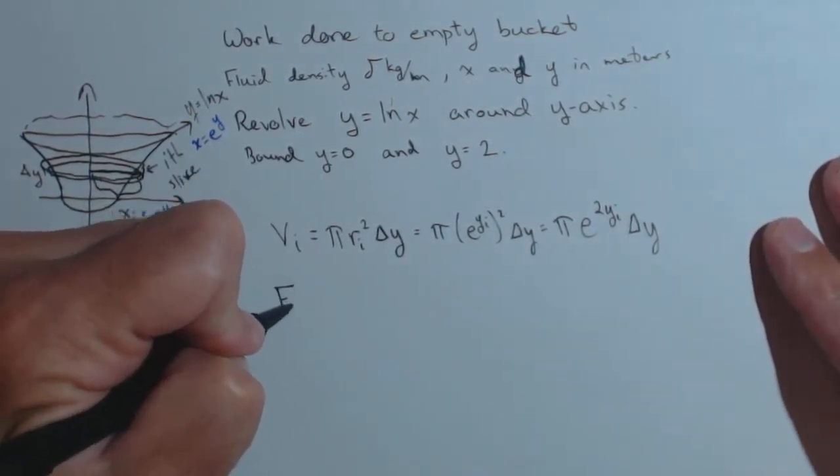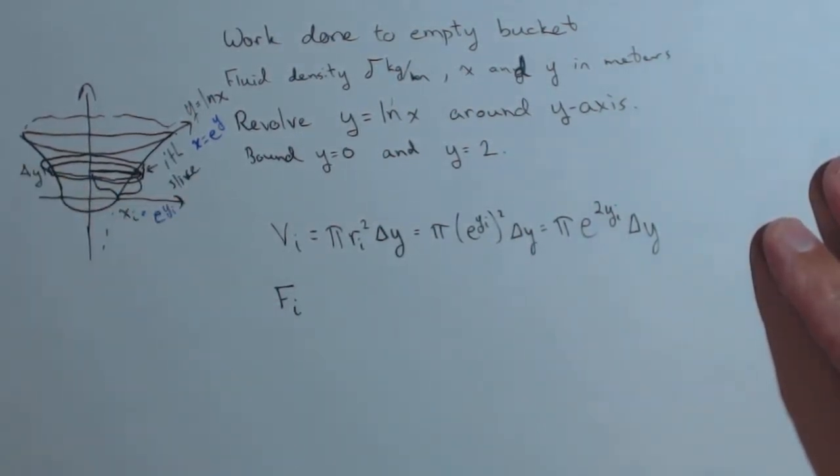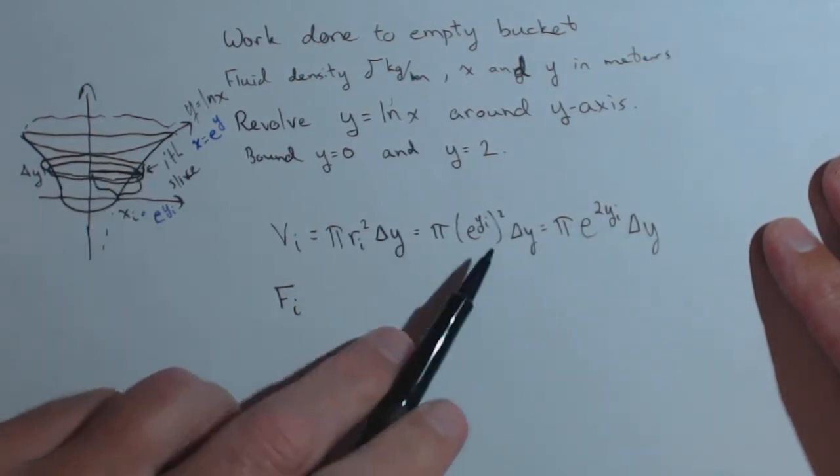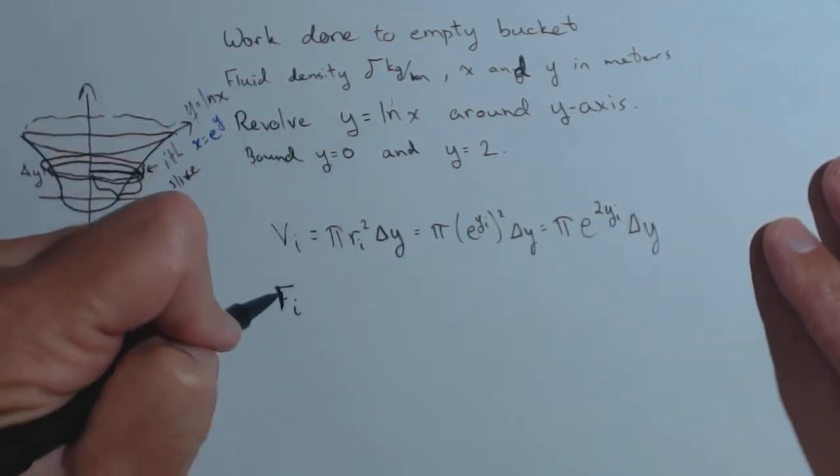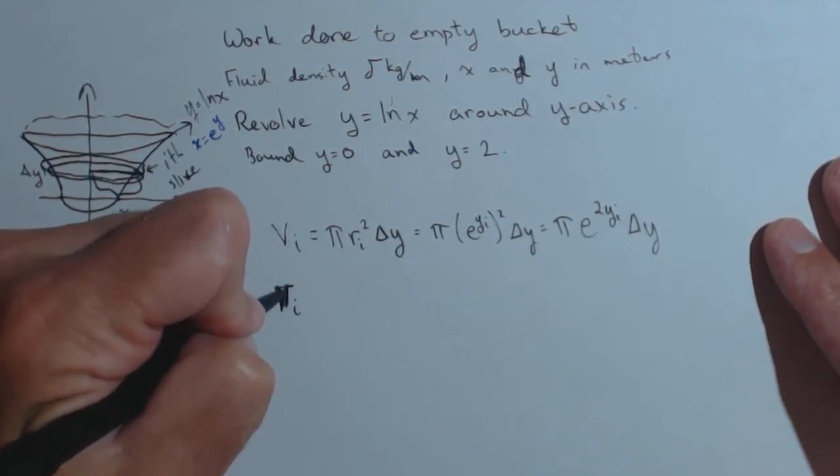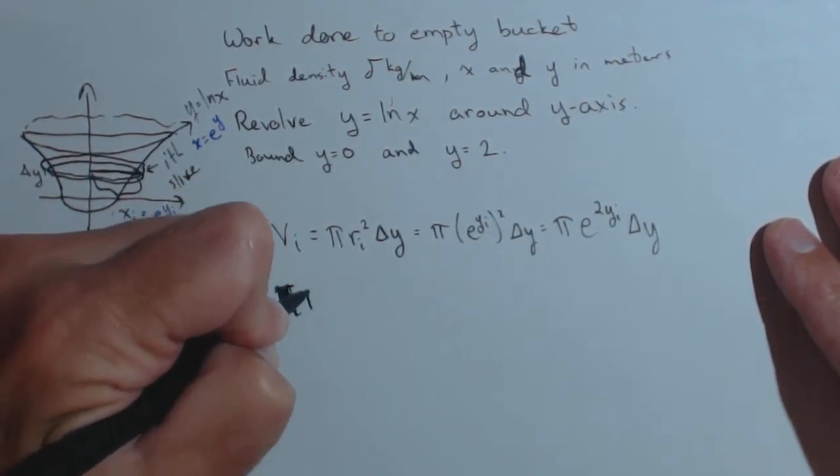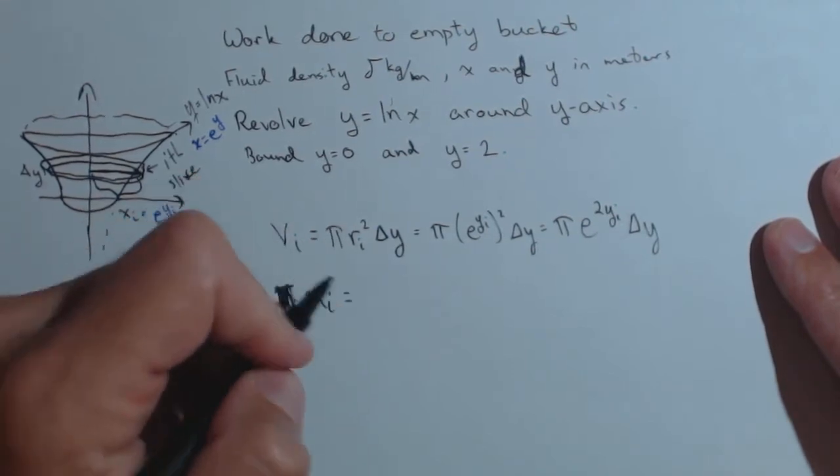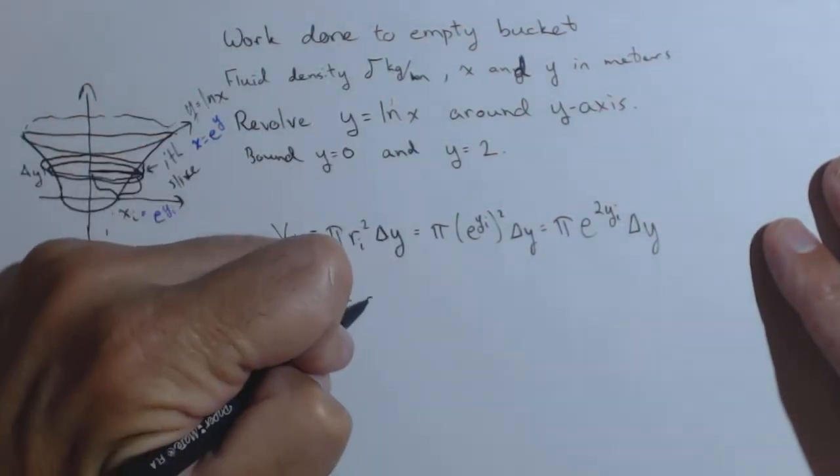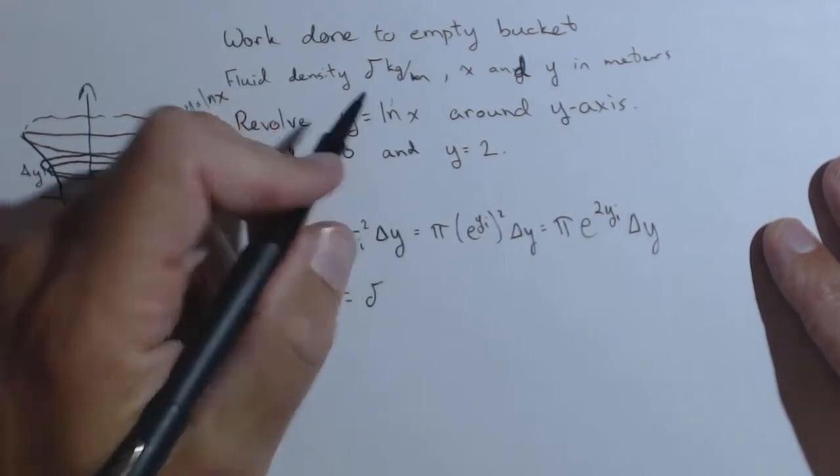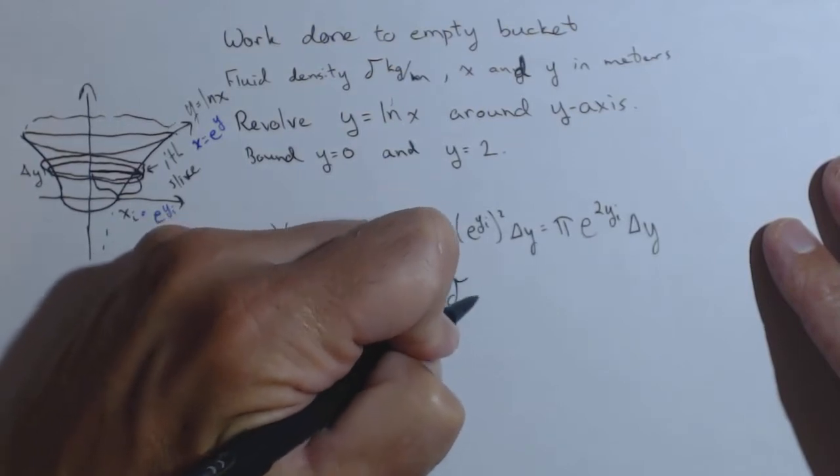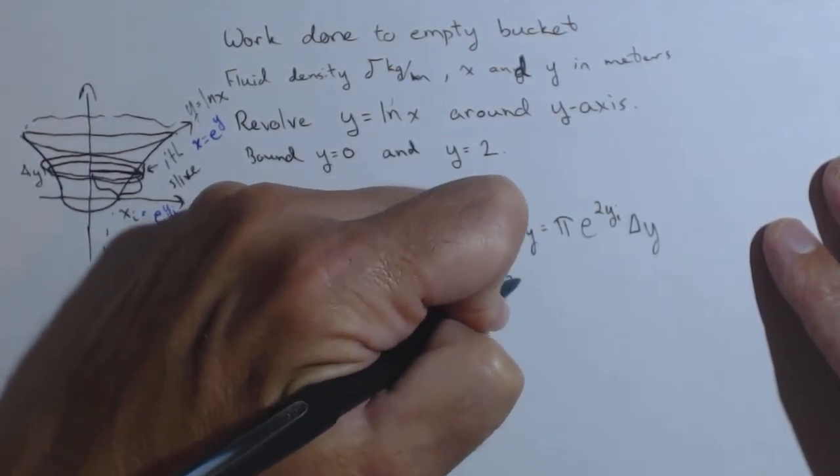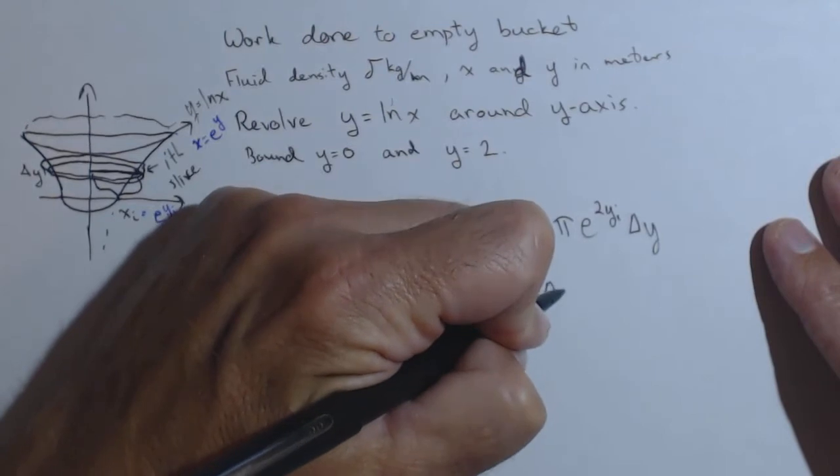Next, we want the force on the i-th slice. Actually, before we do force, let's do mass first, which we can turn into a force pretty quickly afterwards. Mass of the i-th slice is the density times the volume. I'm using delta for the density for now; you can put in whatever density you want. So that's delta*pi*e^(2y_i)*delta y.